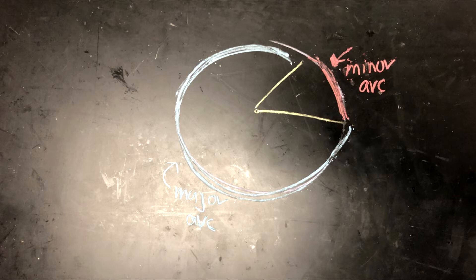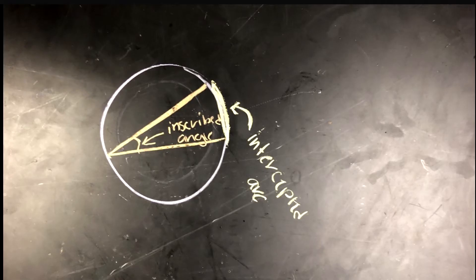An arc is a major arc if it measures greater than 180 degrees and is caught in a central angle. An arc is an intercepted arc if it is caught in an inscribed angle, which is an angle formed by two chords.